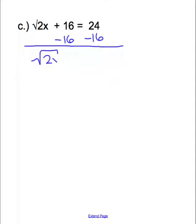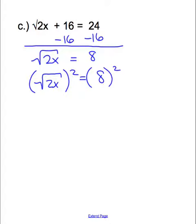So I have the square root of 2x on the left, and then 24 minus 16 is 8. Now we can go ahead and square both sides. The square root of the square will cancel out on the left. We're left with just the radicand, which is 2x. And then on the right-hand side, 8 times 8 is 64.